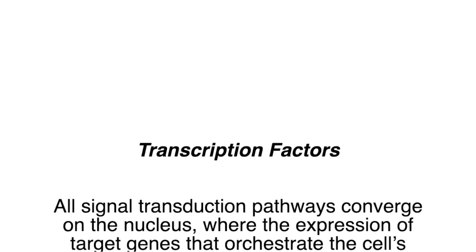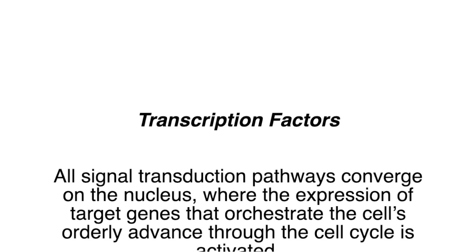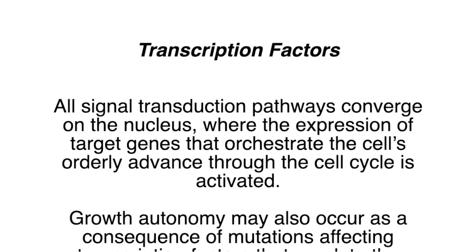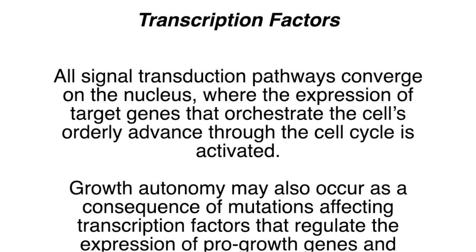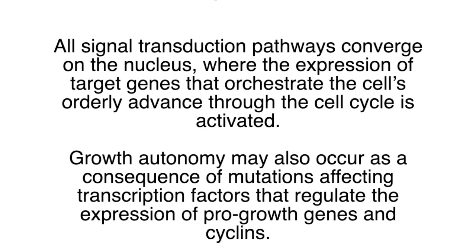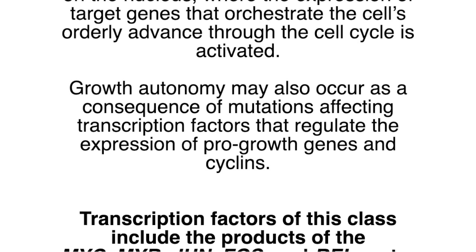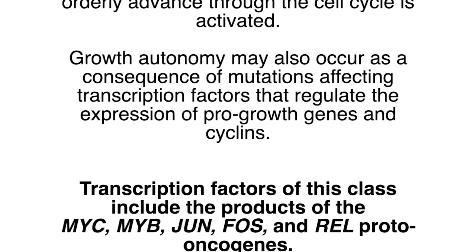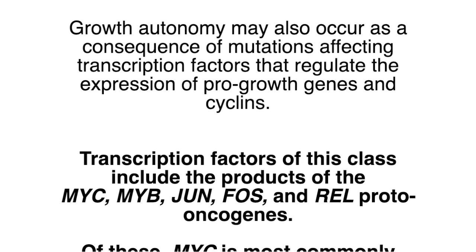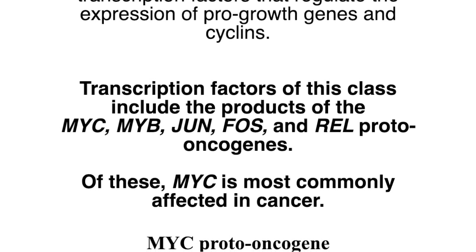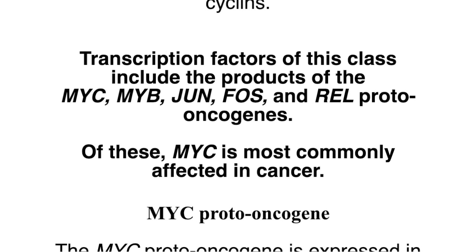Transcription factors: All signal transduction pathways converge on the nucleus where the expression of target genes that orchestrate the cell's orderly advance through the cell cycle is activated. Growth autonomy may also occur as a consequence of mutations affecting transcription factors that regulate the expression of pro-growth genes and cyclins. Transcription factors of this class include the products of the MYC, MYB, JUN, FOS, and REL proto-oncogenes. Of these, MYC is most commonly affected in cancer.